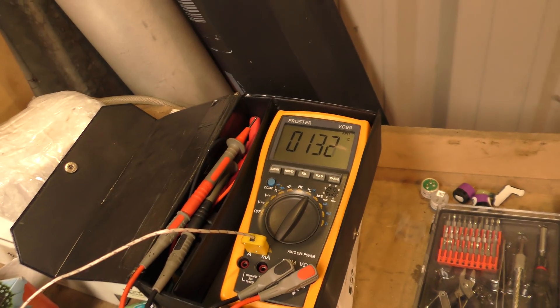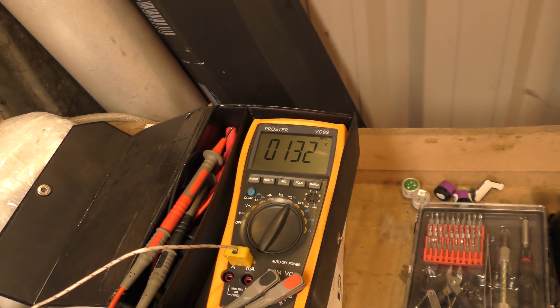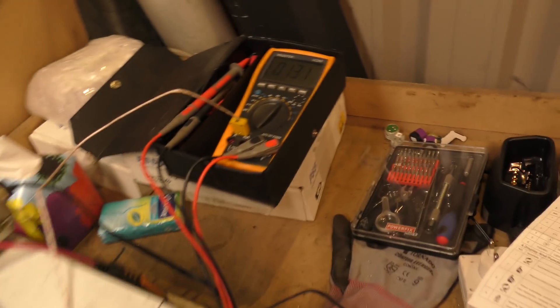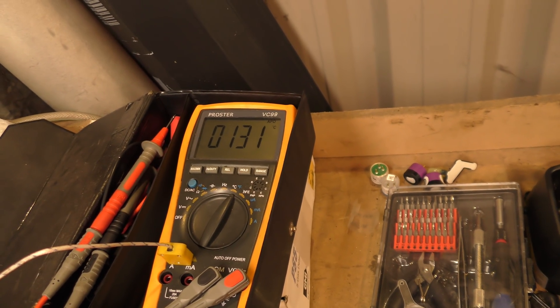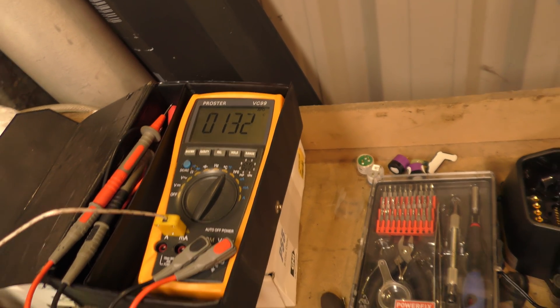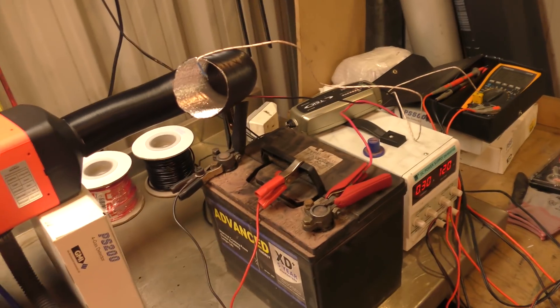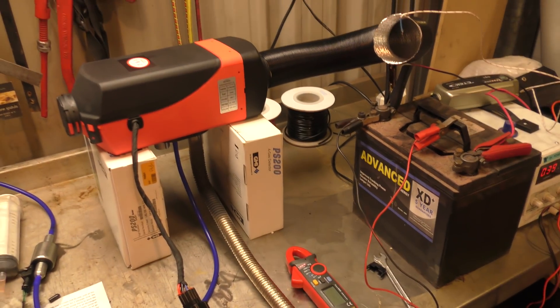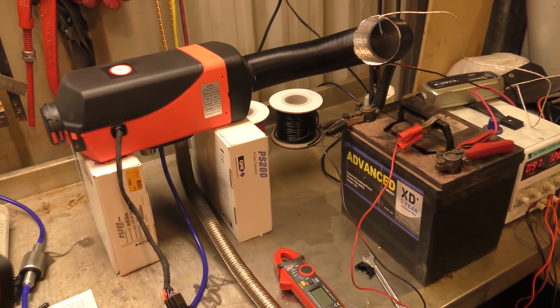It doesn't really seem to matter if it's on its lowest setting or its highest setting, the temperature output from here, which I've got a thermocouple poked in, is about 130 degrees. It goes down a little at max power, but it's blowing a lot harder, so it's more throughput of heat for a slightly lower temperature.